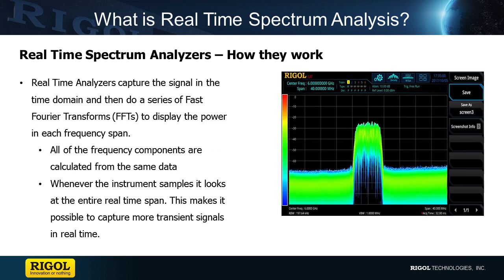A real-time spectrum analyzer captures the signal in the time domain. This single continuous data capture is then separated into different frequencies using fast Fourier transforms. The combination of these FFTs creates a single scan across the entire frequency range from a single set of underlying data.